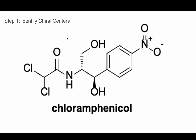Let's look at all the carbons, because a chiral center is a carbon that has four unique branches coming off of it. Four unique — they cannot be the same. Because of that, this carbon here is not a chiral center: it has two chlorines, two identical groups. So that's not a chiral center.